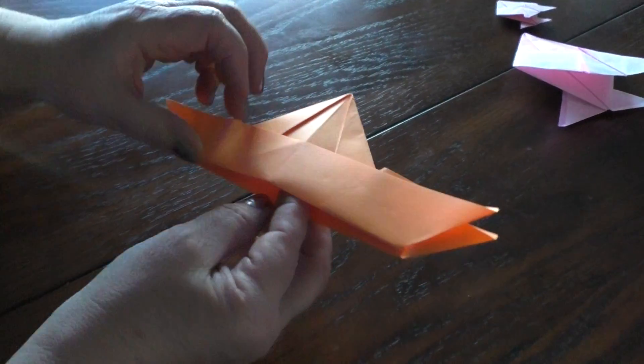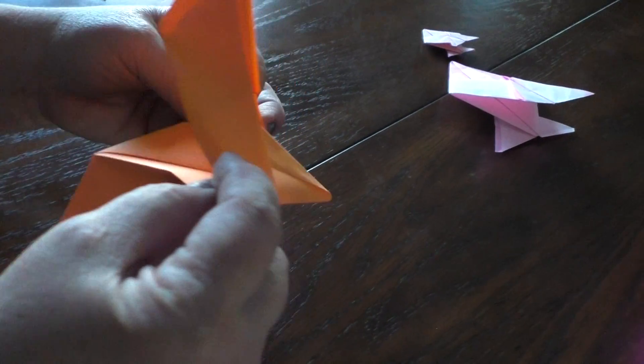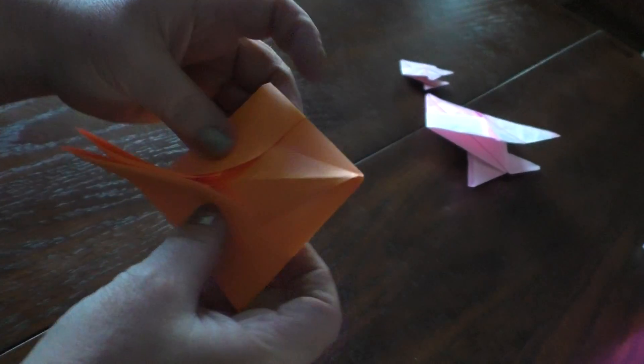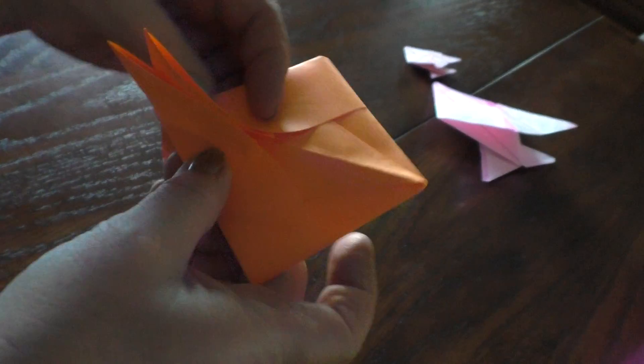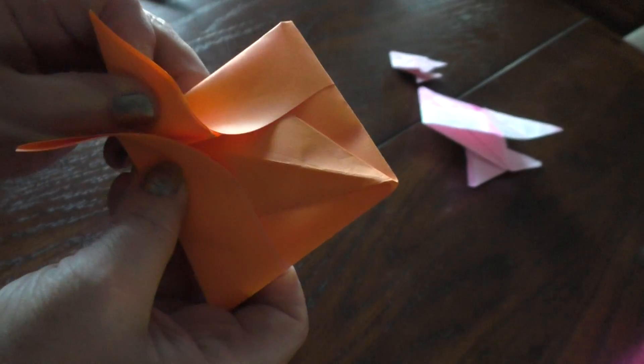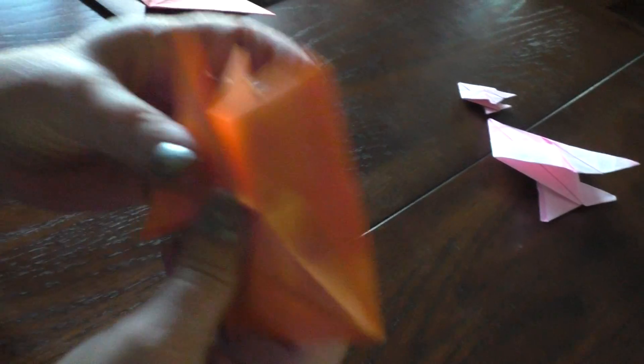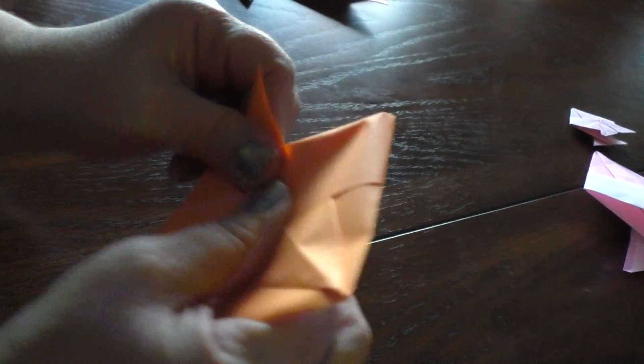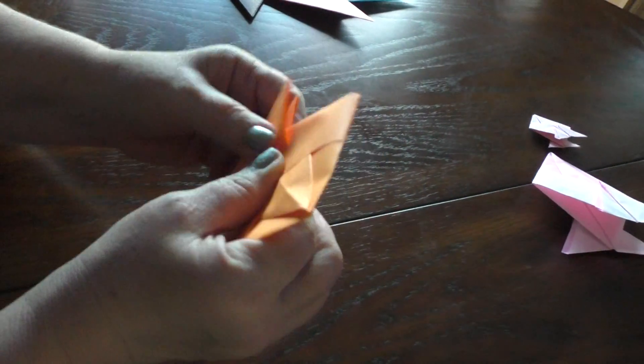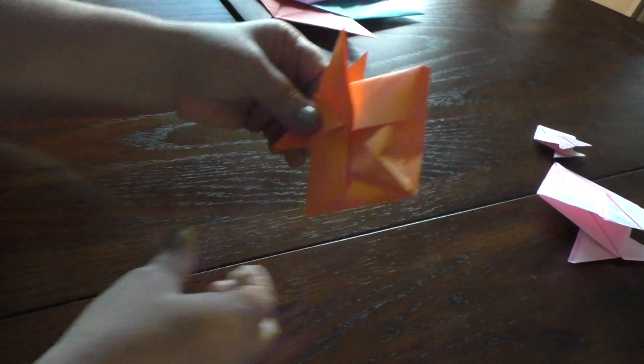Now watch what happens. I'm gonna open this up. Voila! We have a koi. And then you just fold these. And you have the little wings. Or the little, not wings. You got the little fins. Isn't that cute?